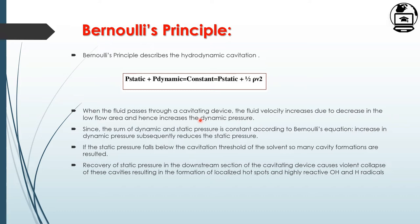As fluid passes through the cavitating device, fluid velocity increases and the flow area decreases, causing an increase in dynamic pressure. The geometry must be designed to reduce the flow area, causing a pressure change. Whenever velocity increases due to reduction of flow area, dynamic pressure increases.